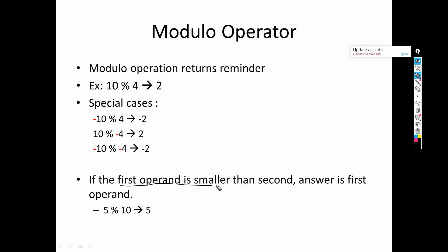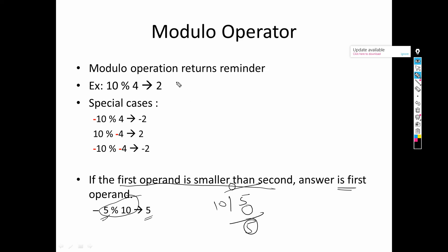Another special case: if the first operand is smaller than the second operand, for example 5 modulo 10, then the answer is the first operand itself. Since 5 cannot be divided by 10, the quotient is 0 and the remainder is 5. So the rule is: if the first operand is less than the second operand, the answer is the first operand itself.